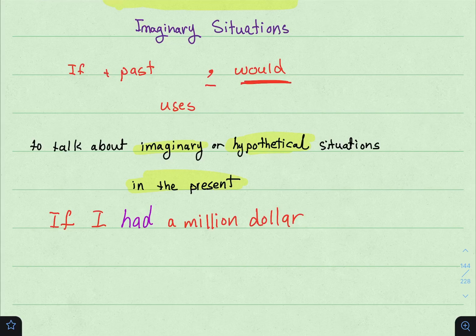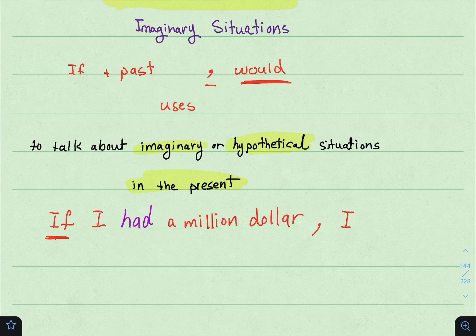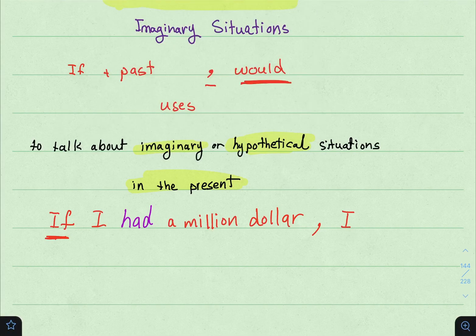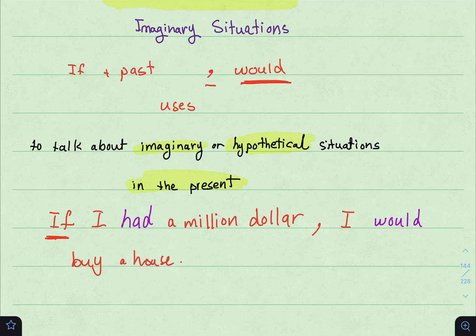If you had a million dollars, what would you do with it? لو كان عندك مليون دولار، ما الذي ستفعل به? If I had a million dollars — when we start with the if clause, دائماً نحط كوما. In the main clause يكون would. I would, for example, buy a house.